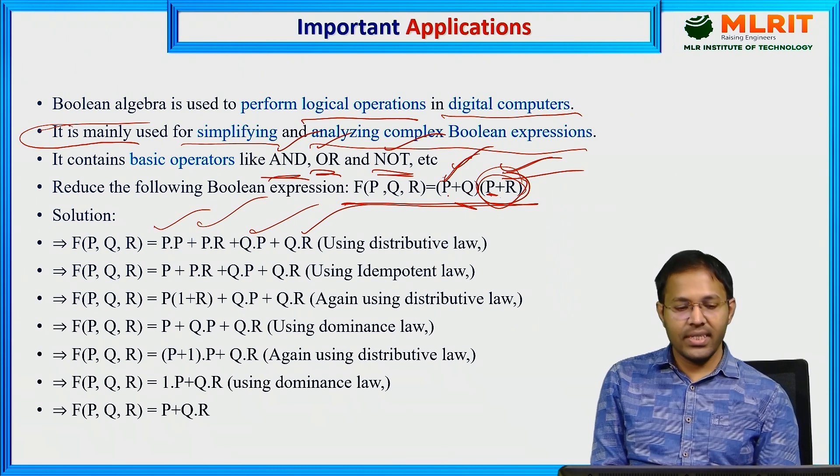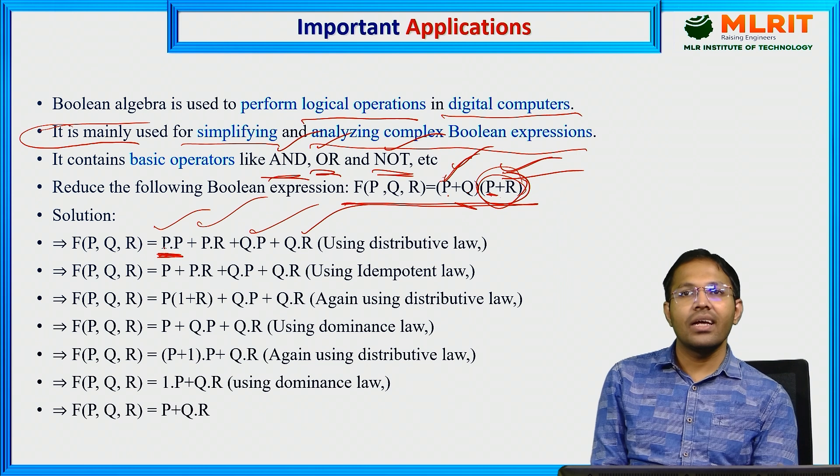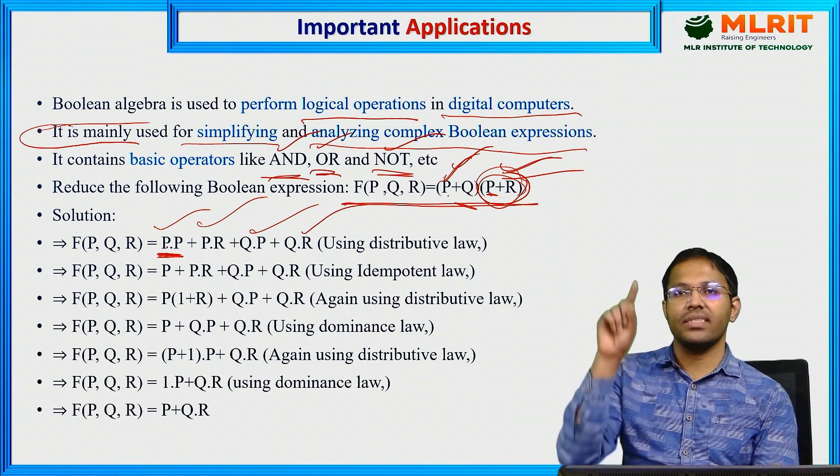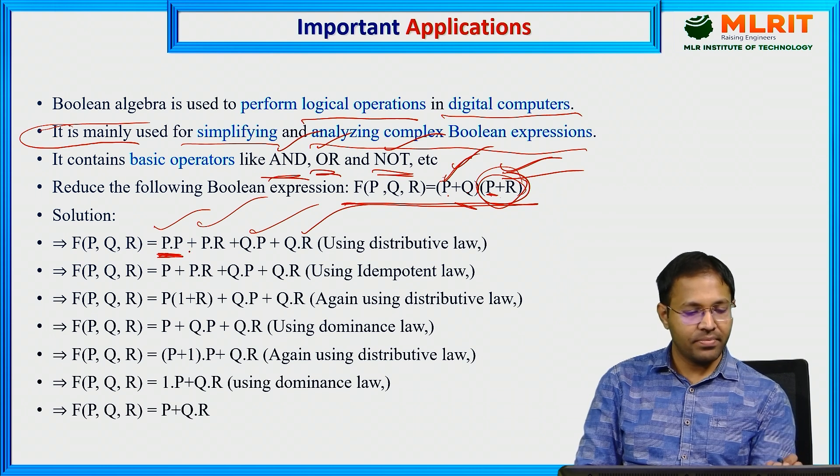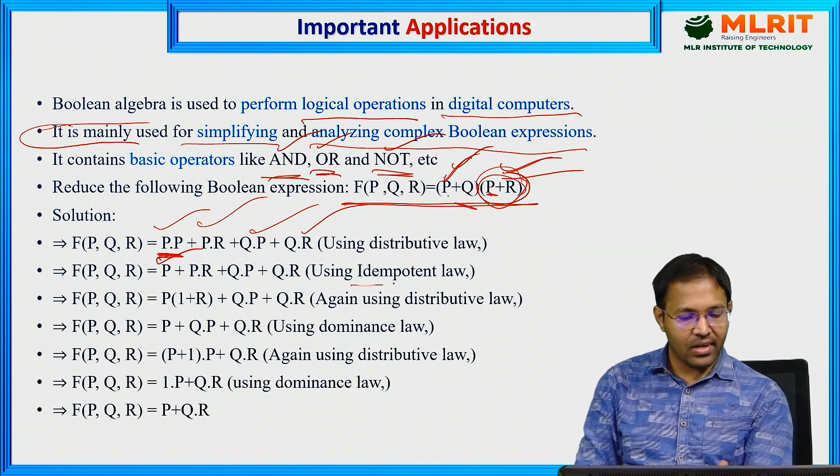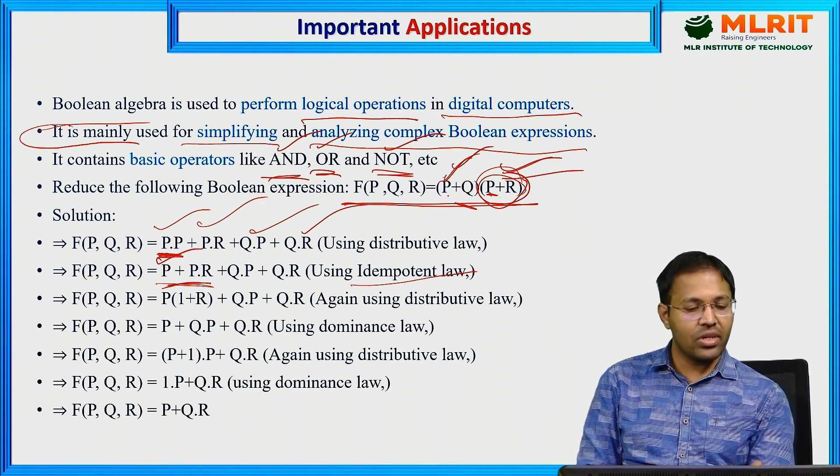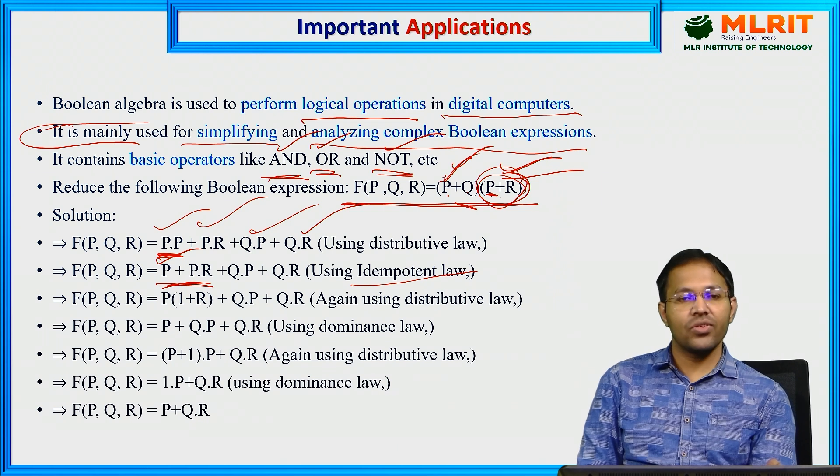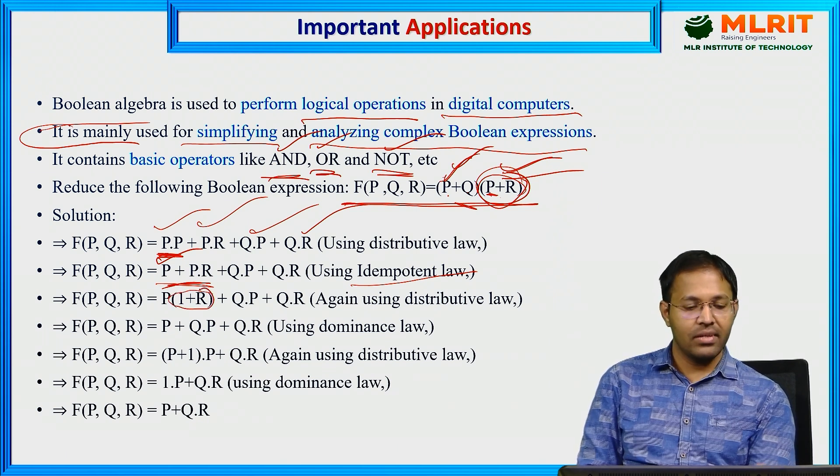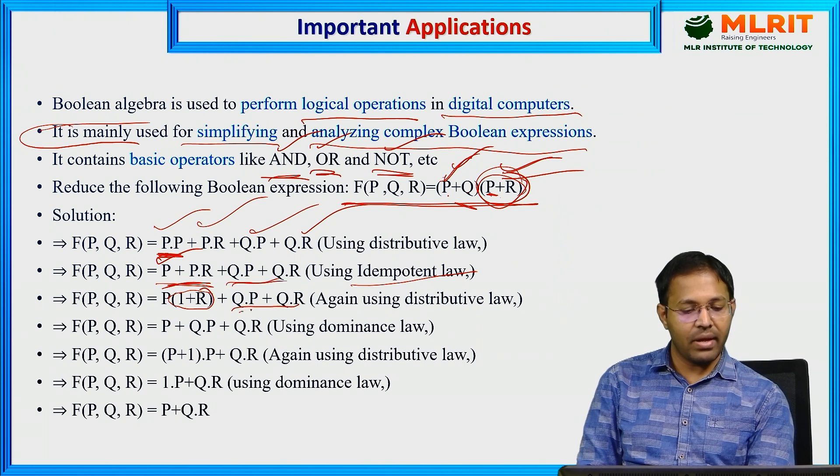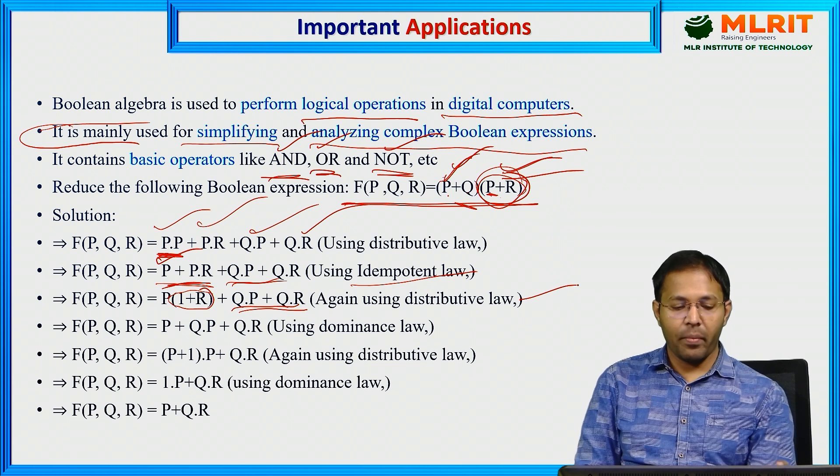Now what we can do here is, in the previous slide we have seen Suresh and Suresh. It is only one Suresh. So P into P gives us P, that is your idempotent law. Now here again, in these two terms, we can take P common. If we take P common, we are left with 1 plus R. Remaining terms we are not disturbing, we are writing them as it is. That is using distributive law.